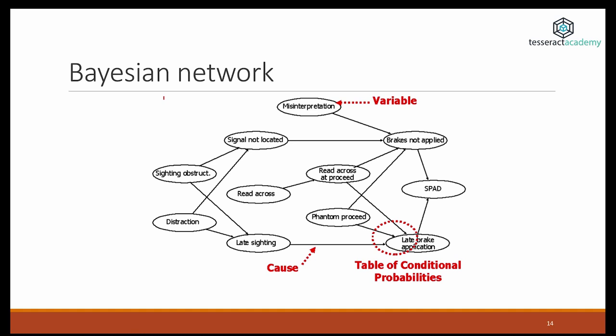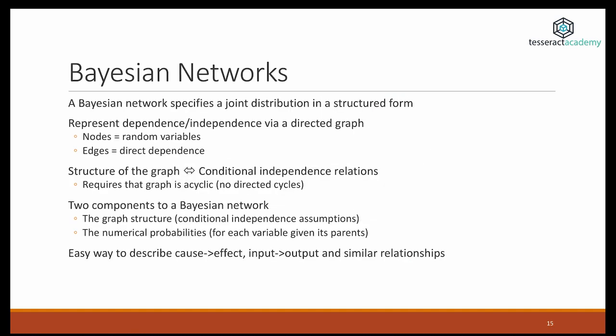A formal definition of Bayesian network is that it consists of a directed graph with nodes and edges. The graph needs to be acyclic.